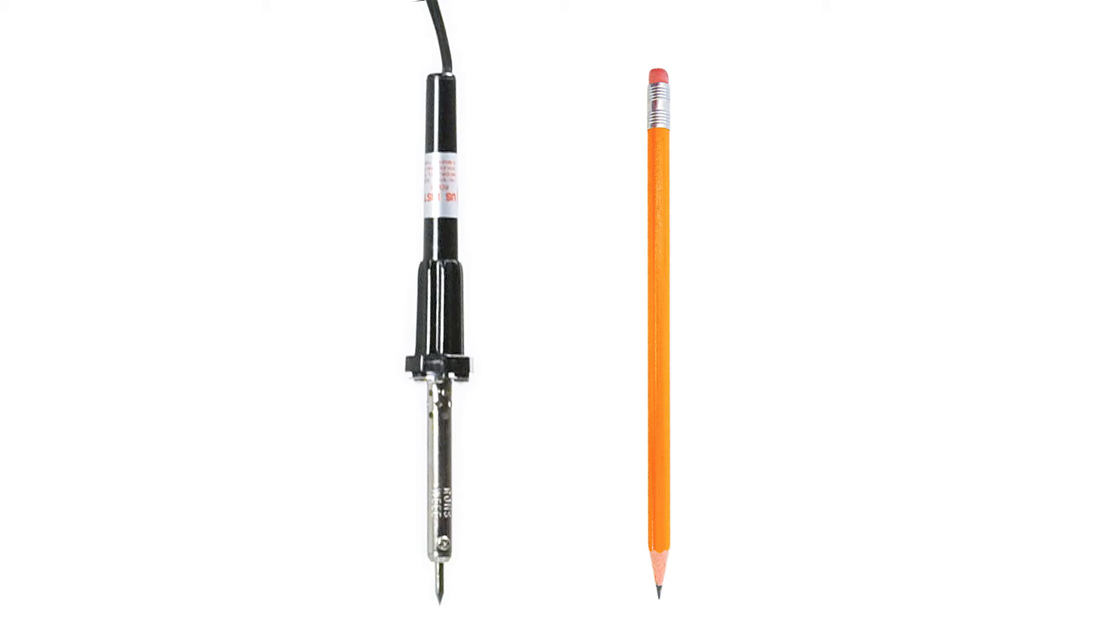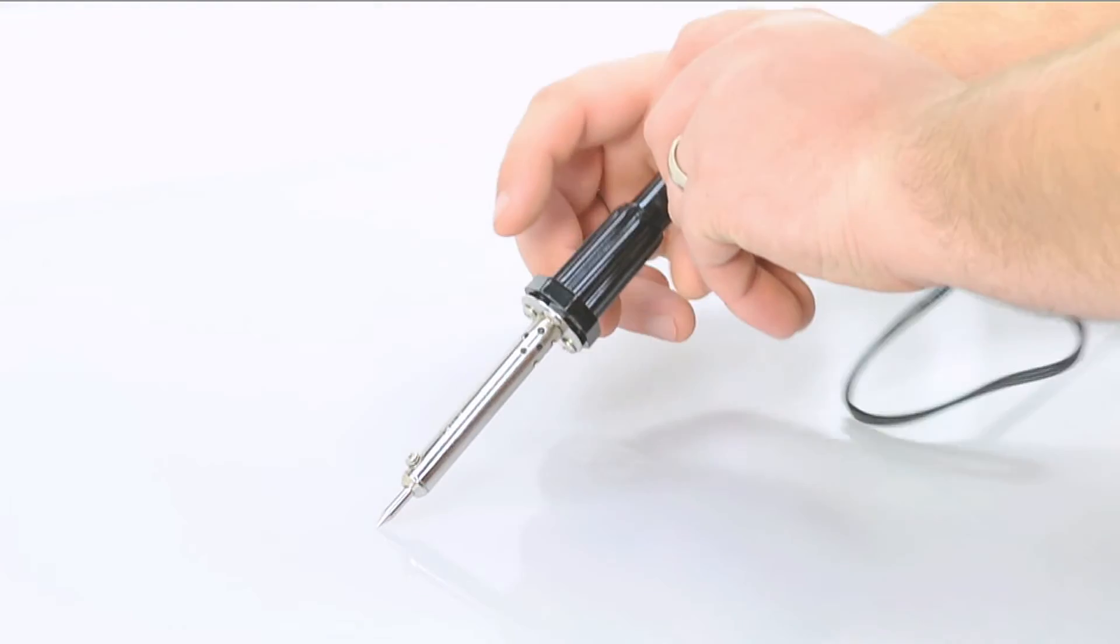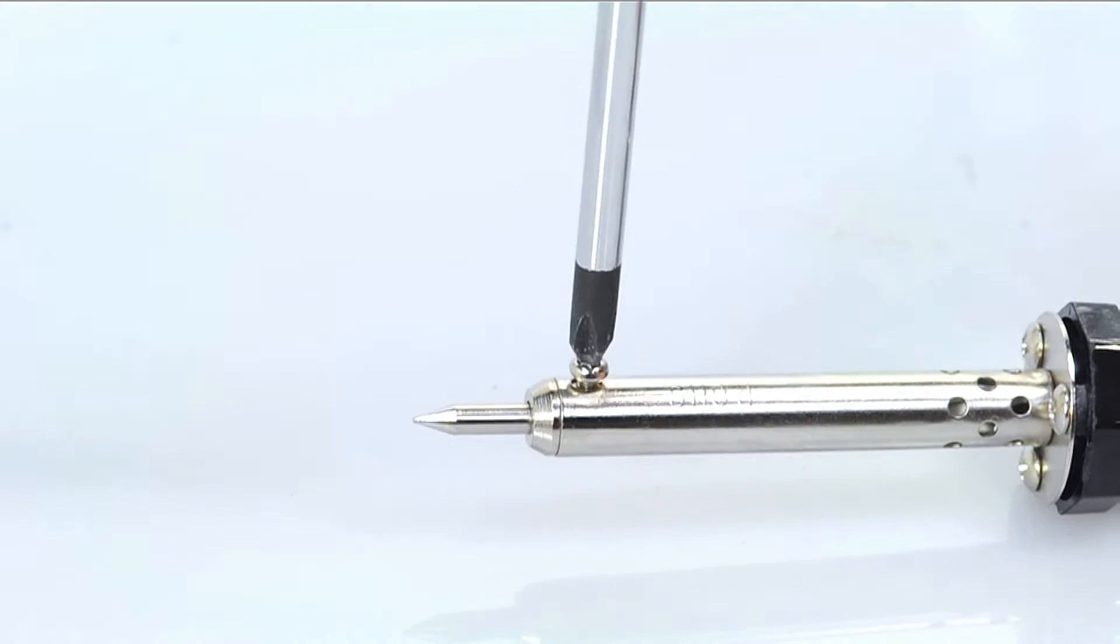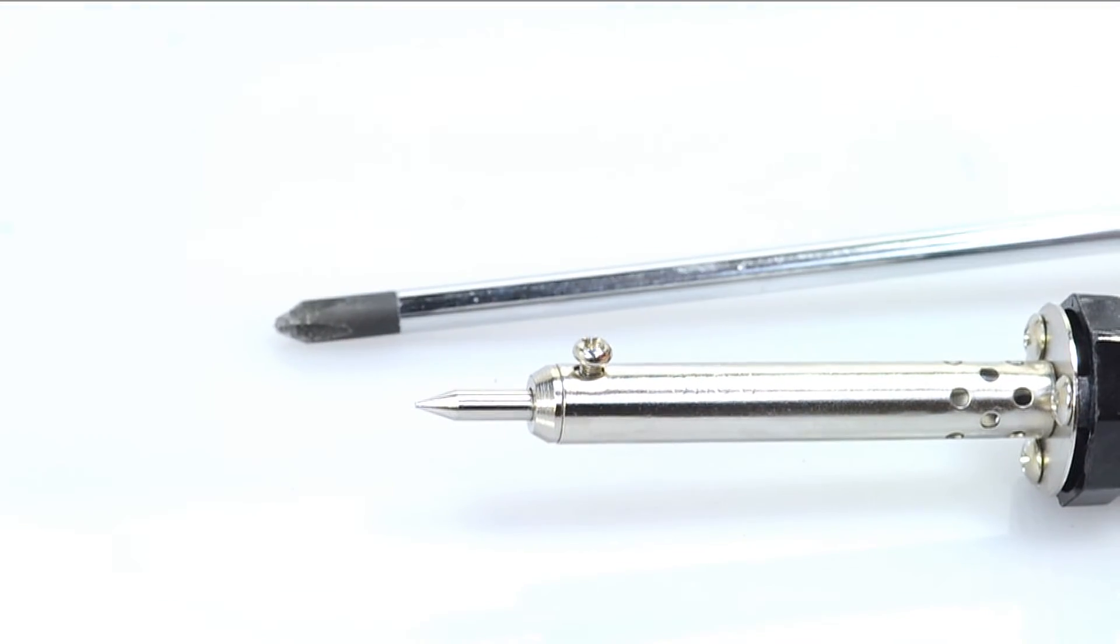This is a 30-watt pencil style soldering iron. It is referred to as pencil due to the way you hold it when soldering. The tip is pre-installed, but can be easily replaced with the turn of a screw.